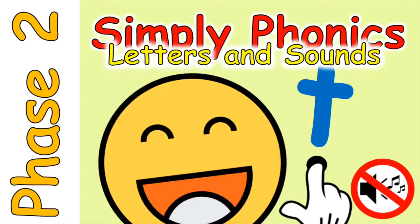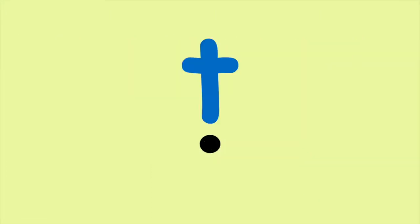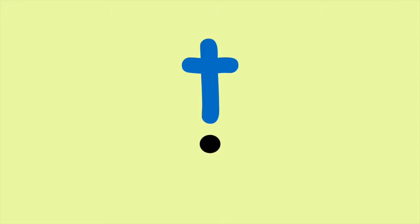Simply Phonics. Phase 2 letters and sounds. Listen to the phoneme that the T grapheme makes when its sound button is pressed. T.